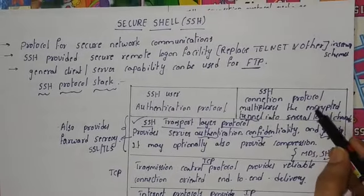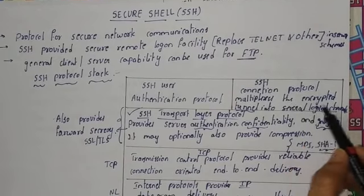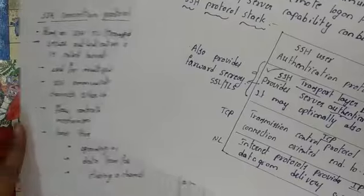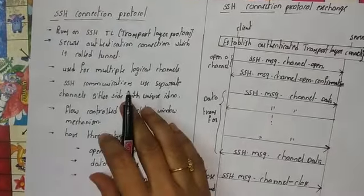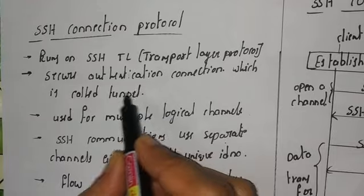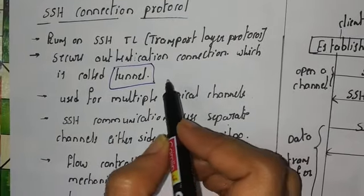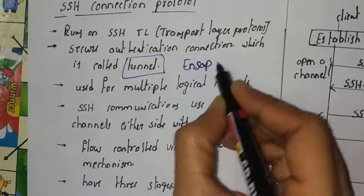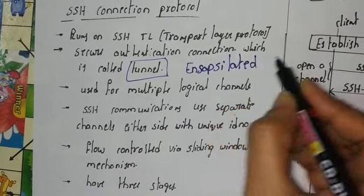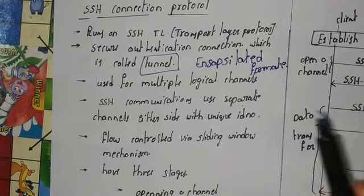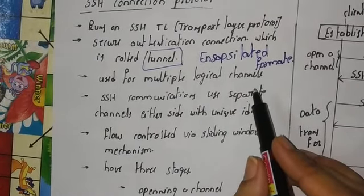In the previous session, the SSH connection protocol was introduced. The connection protocol multiplexes encrypted data and tunnels it into several logical channels. This SSH connection protocol runs on the SSH transport layer protocol and is a secure authenticated connection called a tunnel. Tunneling means data is transmitted in encapsulated format from one network to another.